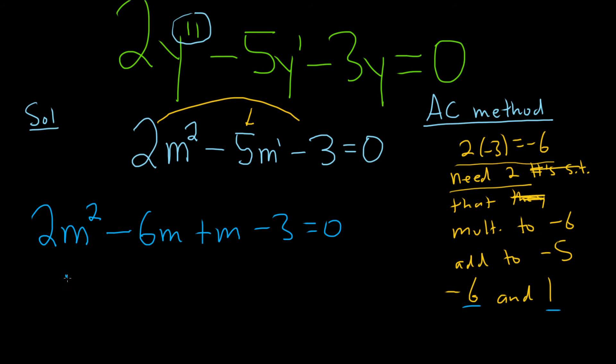Now we can pull out a 2m. So we're left with m minus 3. And then we can pull out a 1 from this piece here. So 1 times m minus 3. And maybe you see what we're doing. We're attempting to use what's called factor by grouping. So after you use the AC method, if it works, you use factor by grouping.